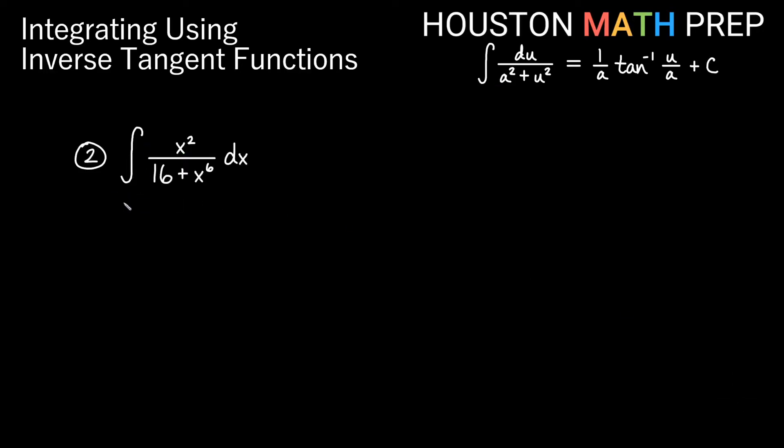Okay, looking at our second one, we have the integral of x squared over 16 plus x to the 6 dx. Knowing that our a squared is the constant part, so this is a squared, and knowing the variable part of this is the u squared, then my x to the 6 is u squared. Let's go ahead and write down information about a and u. So if a squared is 16, then a must be 4. And if u is x to the 6, what squared gives us x to the 6? x cubed times x cubed would give us x to the 6. So our u is x cubed.